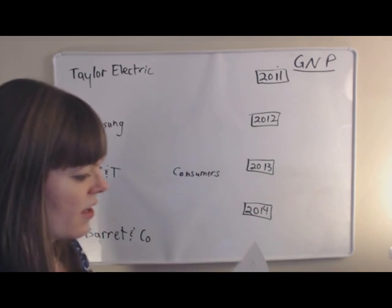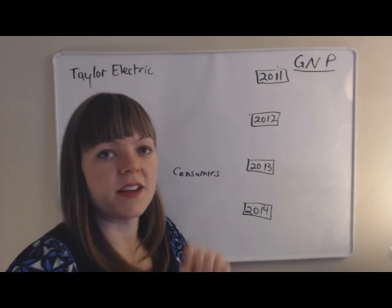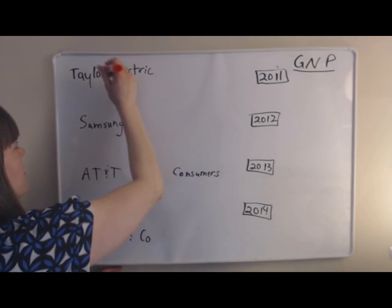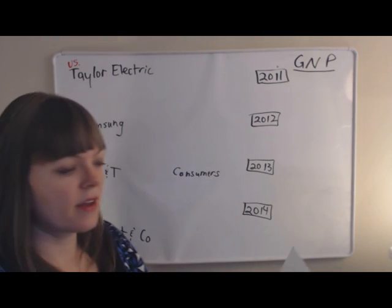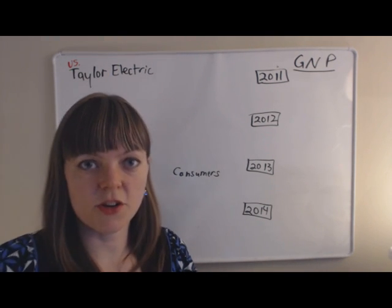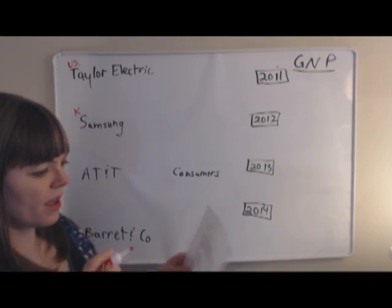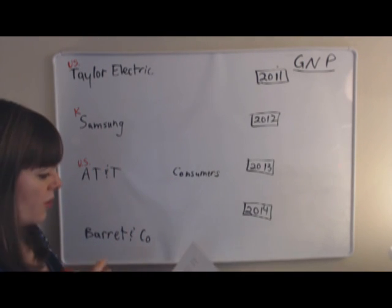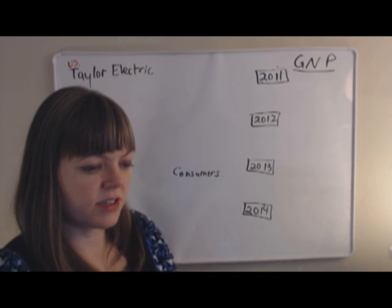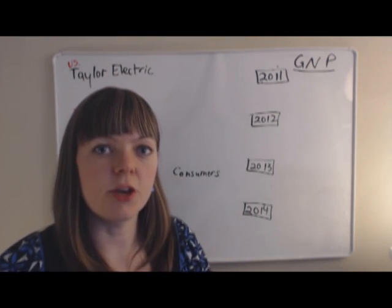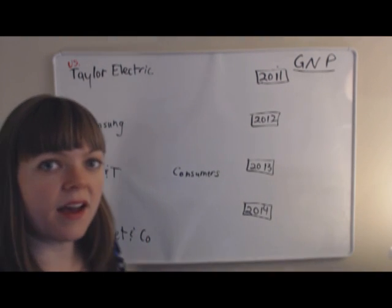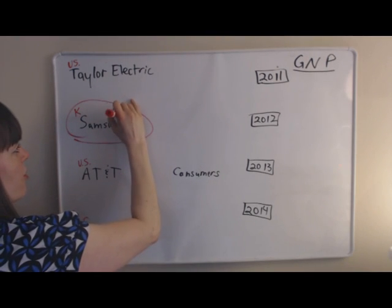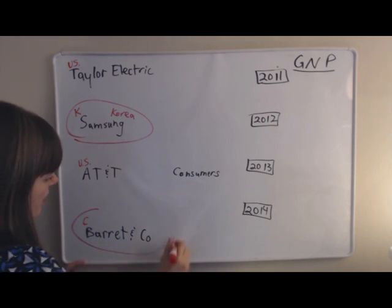The problem says Taylor Electric is a U.S.-owned company operating in Korea. So even though it's physically in Korea, since it's owned by a U.S. company, it acts like it's inside the U.S. Samsung is a Korean company located in Korea, so I'll put K for Korea. AT&T is a U.S. company on U.S. soil. Customers are in the U.S., and Barrett & Company is a consulting firm owned by a Canadian operating in the U.S., so from the GNP perspective it's in Canada. I'm drawing the Korean border and the Canadian border.